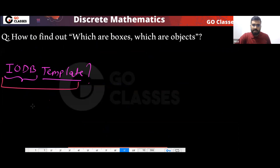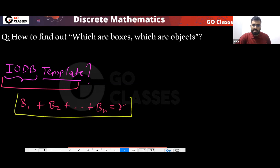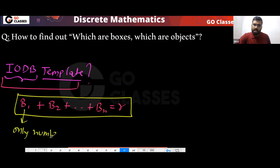What is the IODB template? You can write the problem in this form — a distribution where only the number matters, not the content. That is your IODB template.